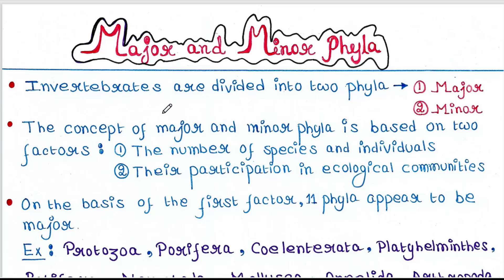So basically, invertebrates are divided into two phyla: major and minor.